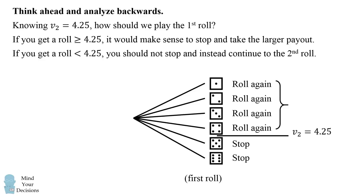So in those cases, you would not accept the lower value. You would get the average payout of 4.25 by rolling again. If we were to stop, we would get an average payout of 5 or 6, which becomes 5.5.